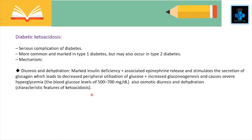Diabetic ketoacidosis is a serious complication, more common and marked in type 1 but may also occur in type 2 diabetes. Marked insulin deficiency plus associated epinephrine release stimulates glucagon secretion, leading to decreased peripheral utilization of glucose and increased gluconeogenesis, causing severe hyperglycemia with blood glucose ranging up to 500 to 700 mg per dL. A characteristic feature of ketoacidosis is osmotic diuresis and dehydration.